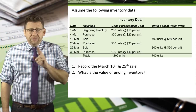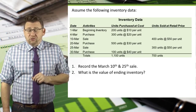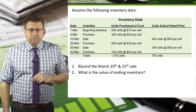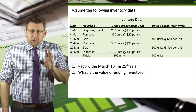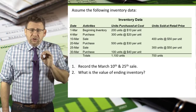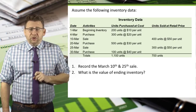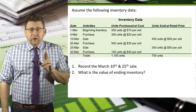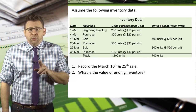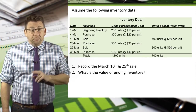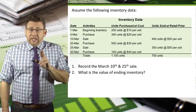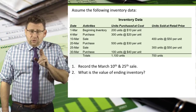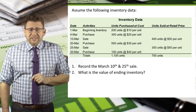We will need to figure out the cost by applying the average cost valuation to our data. March 20th, we purchased an additional 500 units at $30 each. March 25th, we sold 300 units at a price of $50 — we'll figure out the cost in a minute.